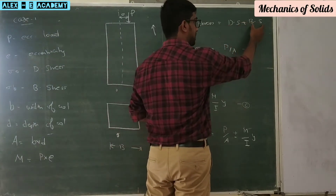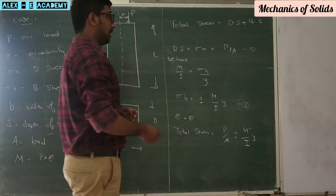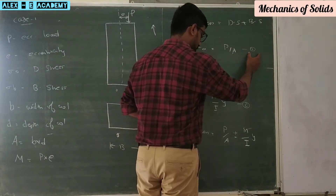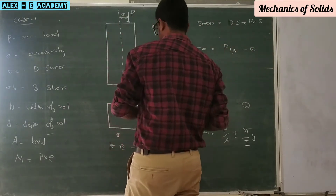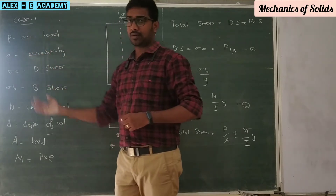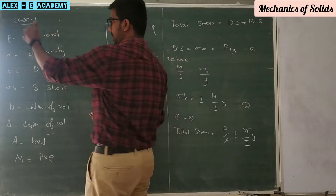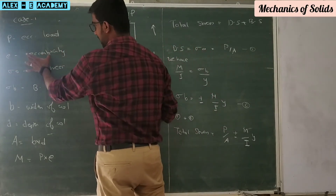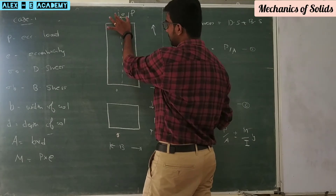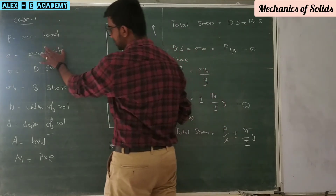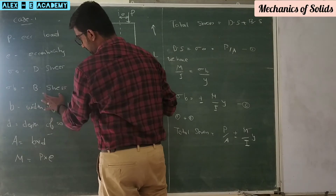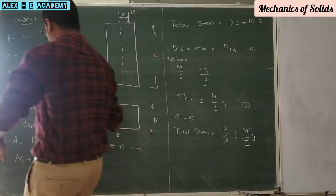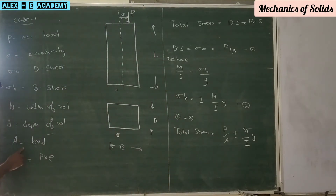This is a total stress: direct stress plus bending stress. Sigma naught is equal to P by A — equation number 1. Let capital P be the eccentric load. The eccentric load is the load acting across a real distance from the centre line. E is the eccentricity. Sigma naught is the direct stress, sigma B is the bending stress. B is the width of the column, D is the depth of the column.